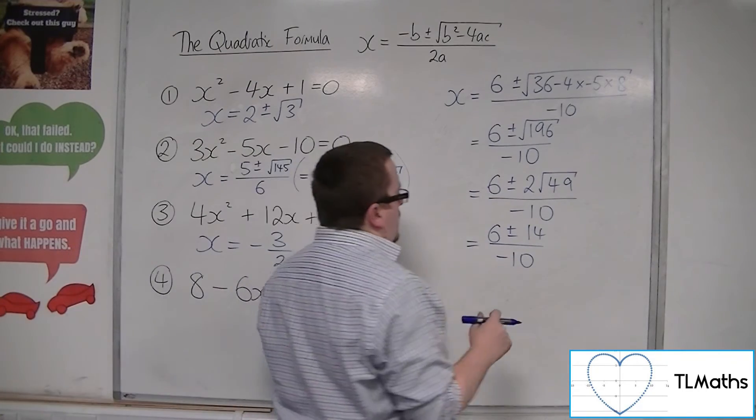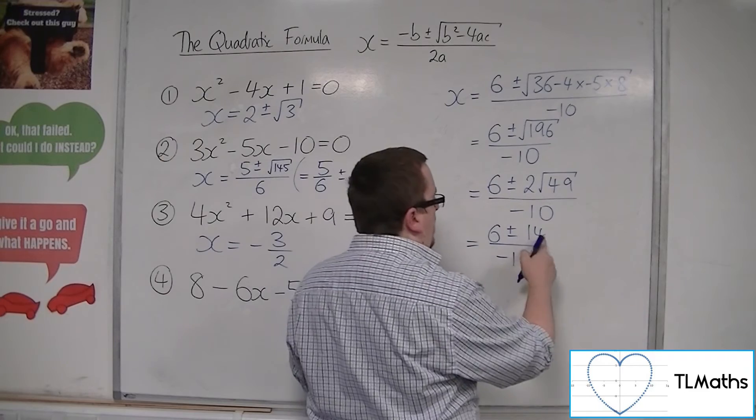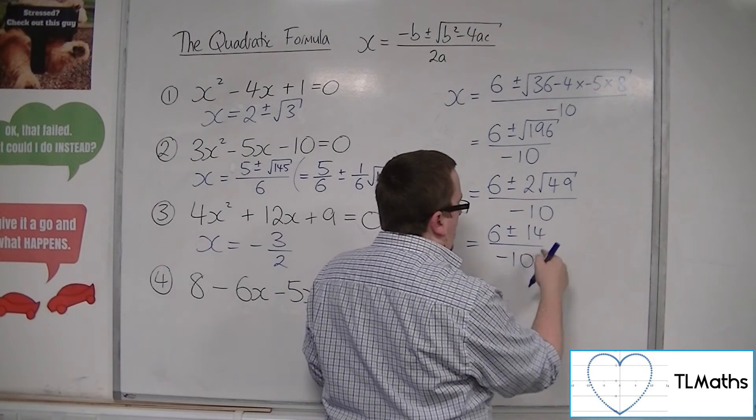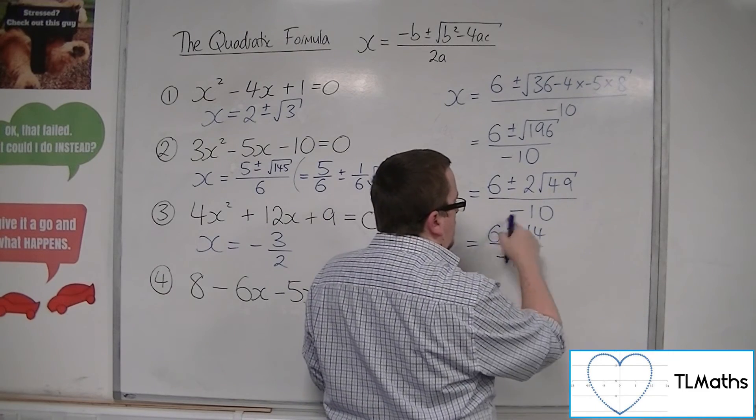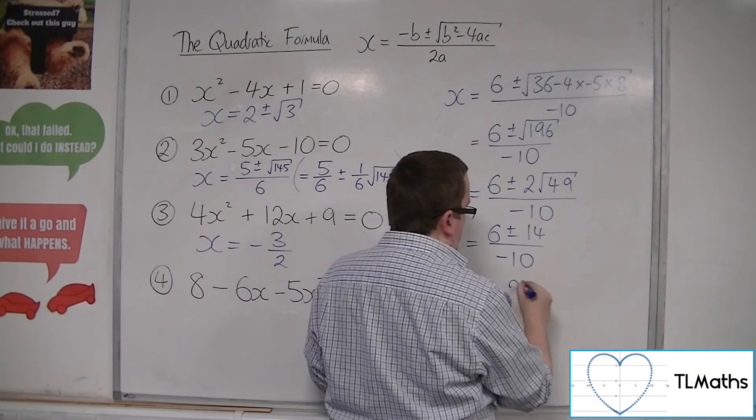So we could say that this is equal to 6 plus 14 over minus 10, so we get 20 over minus 10, so minus 2.